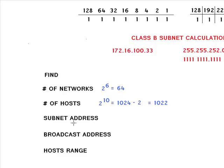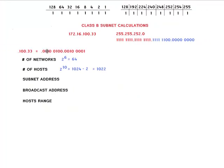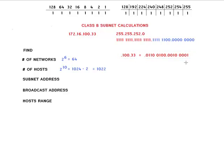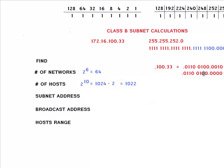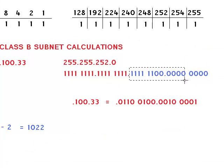To find the subnet address, you take the IP address and the mask and perform an AND operation between them. I took the last two octets and converted them to binary — 100 and 33 convert to binary as shown here. The mask 252.0 in binary is this one right here.